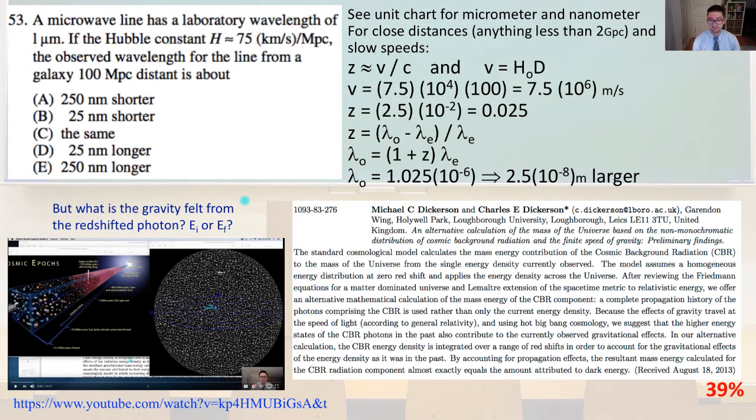which yes, is significantly less than the speed of light, which is 3 times 10 to the 8th meter per second. So Z is going to equal 2.5 times 10 to the minus 2 equals 0.025. And so Z is going to also equal lambda observed minus lambda emitted divided by lambda emitted.